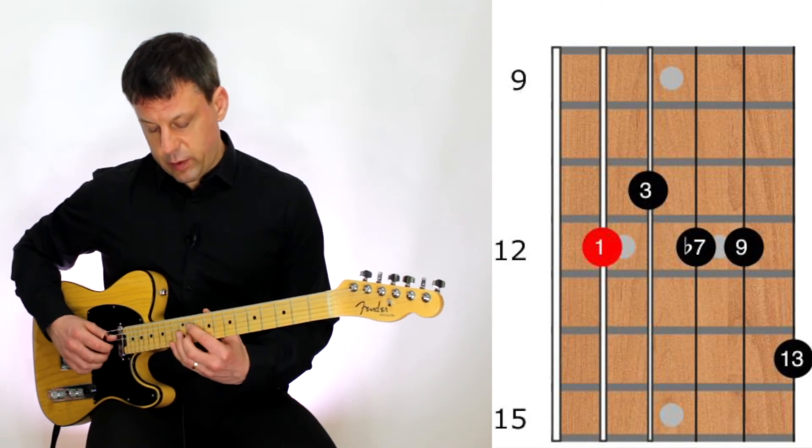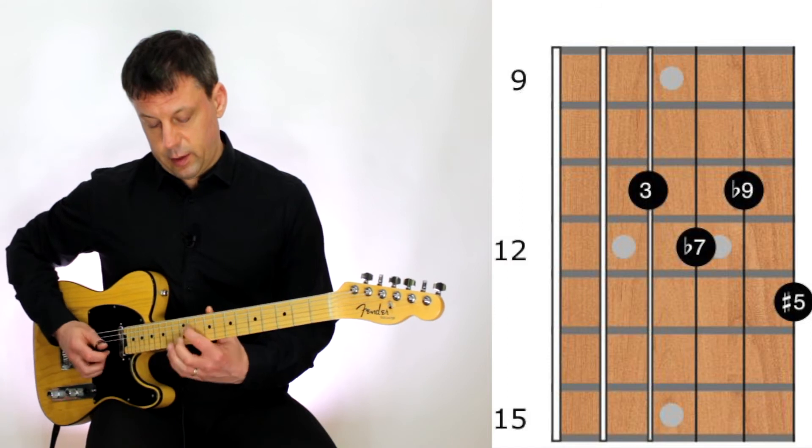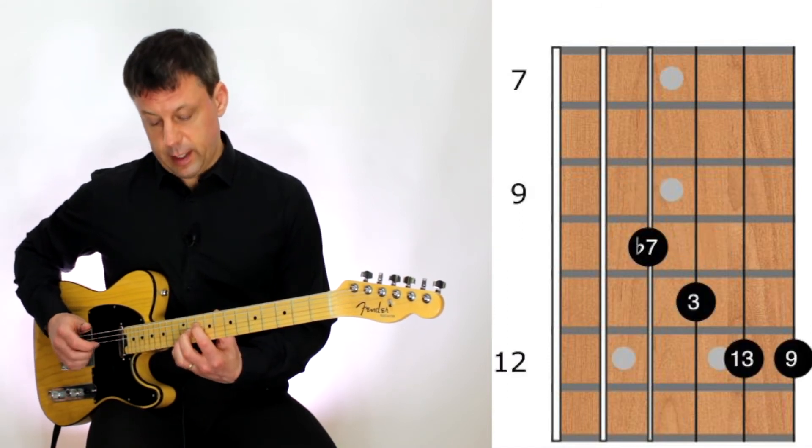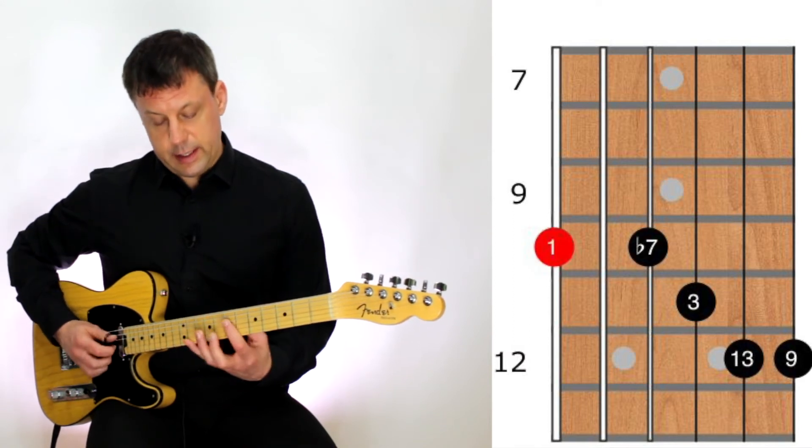Then we have an A dominant 7 with a sharp 5 and a flat 9, going to a D13 chord. And again, good contender for bass note. D9.